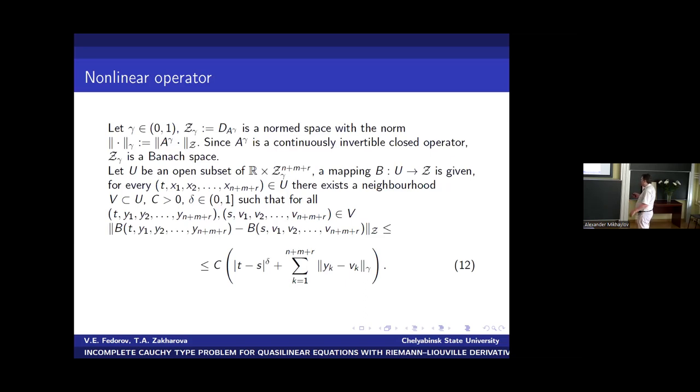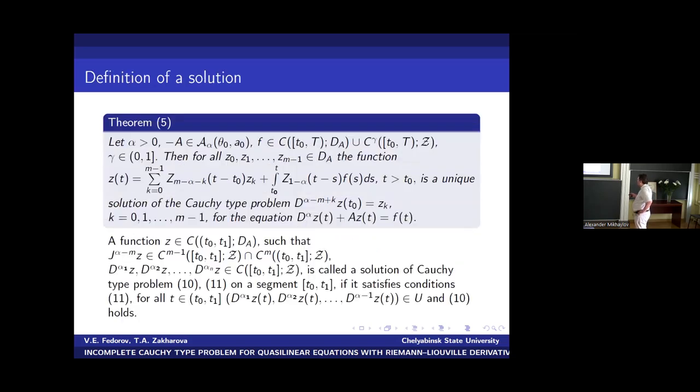We can now take Z_gamma, this set. And it is normed space with such norm. And it is Banach space. And U is an open subset of Cartesian product. And B, the nonlinear mapping, satisfies this inequality locally. The same as for semigroups, but in that case we have only one phase variable, but here we can have many phase variables for every fractional derivative or integral.